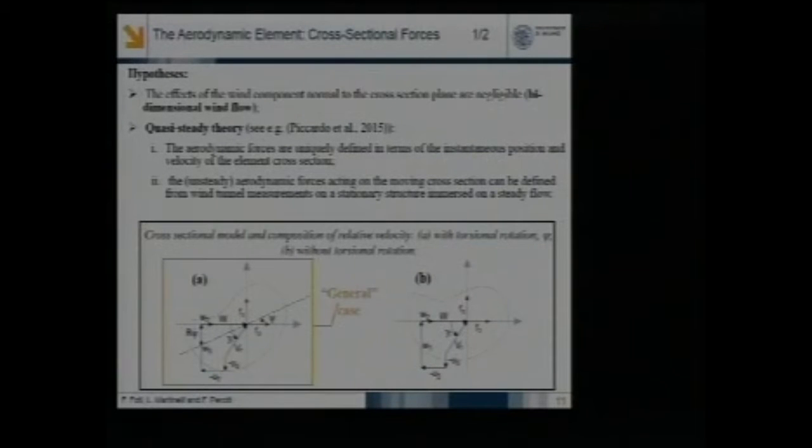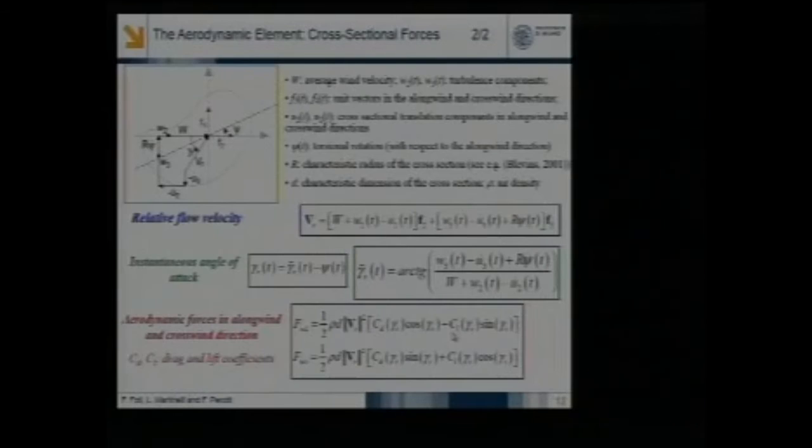Aerodynamic cross-sectional forces are evaluated within the quasi-steady theory. We assume as negligible effects of longitudinal components, so wind components normal to the cross-section. We consider two cases: the case in which we consider the effect of torsional rotation, the rotation of the cross-section with the direction of the impinging wind, and the special case of no cross-sectional rotation. I will omit derivations. We can evaluate the relative flow velocity, the instantaneous angle of attack, and then we came up with aerodynamic forces per unit length in the along wind and cross-wind direction, starting from the knowledge of aerodynamic coefficients of drag and lift. In this case, we neglect the effect of the pitching or aerodynamic moment.